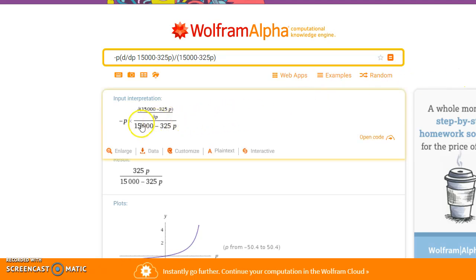It's always a good idea to check the input. So what Wolfram Alpha thinks we want is to evaluate negative P times the derivative of this price-demand function divided by the original price-demand function itself.